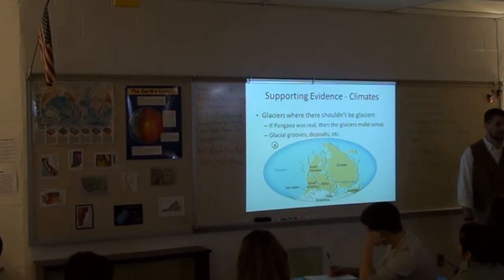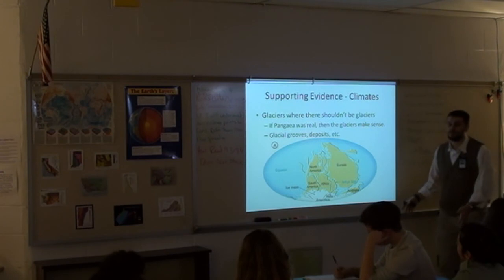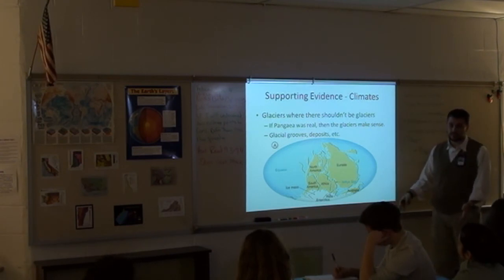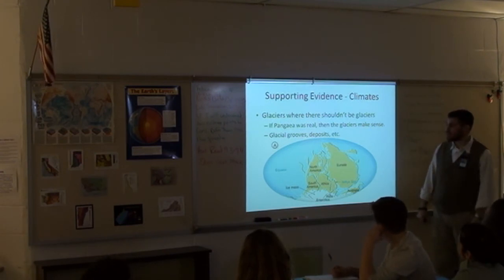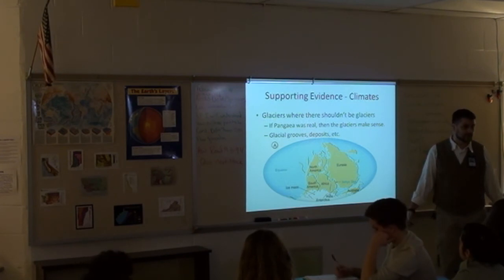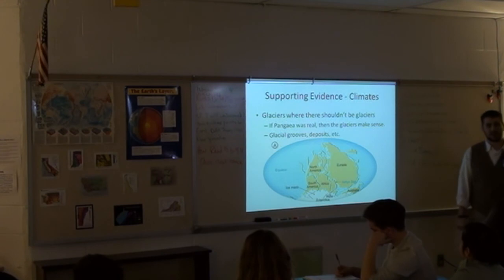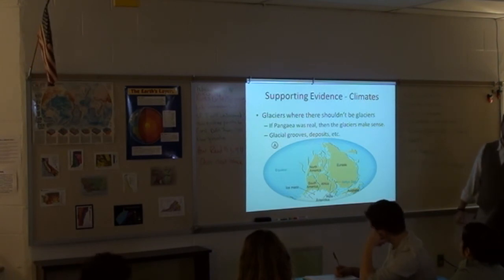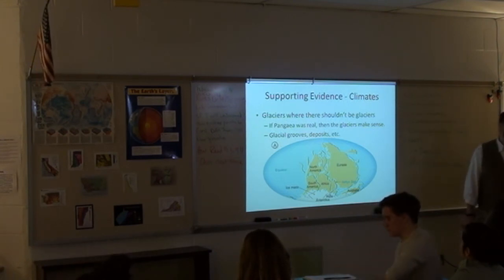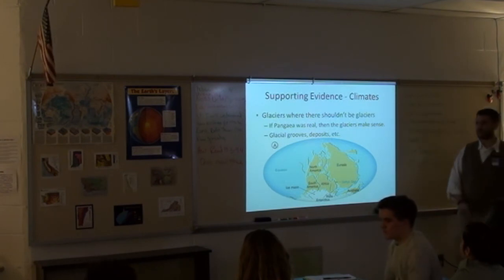Those are three really strong pieces of evidence that support continental drift theory, proposed by Alfred Wegener. Did the scientific community say, 'Hey, look at all this great evidence, you must be right'? No — they rejected his hypothesis and were pretty aggressive against him. They said this can't happen, it doesn't work.